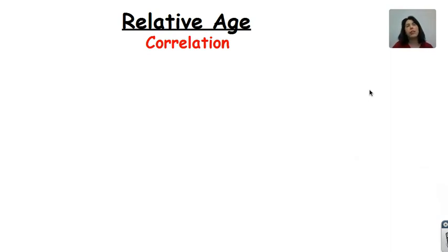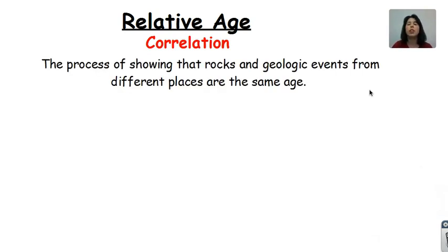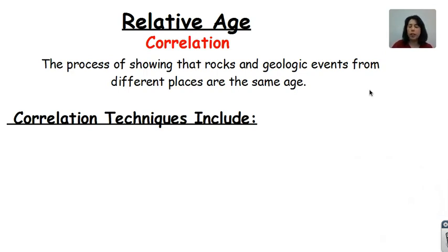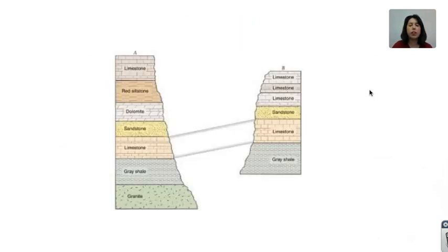Sometimes we want to compare or match up similar rock types, geologic events, and fossils from one location to another. We use a technique called correlation — the process of showing that rocks and geologic events from different places are approximately the same age. There are several techniques, but these are the three we focused on in class. One is using similar rock types: you go look at the exposed bedrock and try to match up similar rock types and patterns. For example, this limestone here matches up to this limestone, this gray shale to here, this sandstone to here — a similar pattern, indicating these rocks must have formed at the same time and are around the same age.